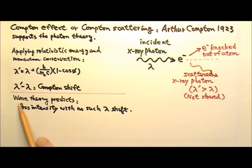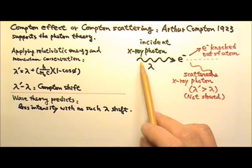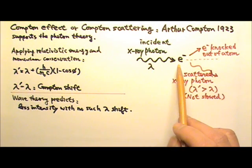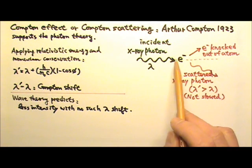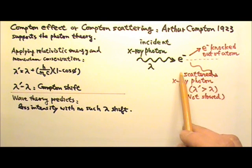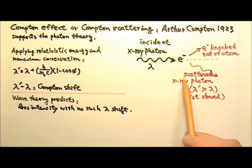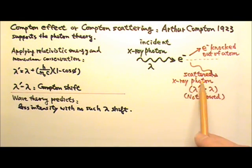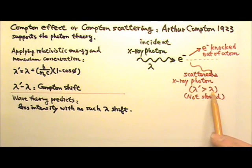The wave theory fails at explaining the Compton shift. According to the classical EM wave theory, when an EM wave with a certain frequency is incident on a charge at rest, the EM wave would set the charge oscillating at the same frequency, thereby re-emitting EM waves of that same frequency. So according to the wave theory, the outgoing X-ray should have the same original frequency and wavelength.